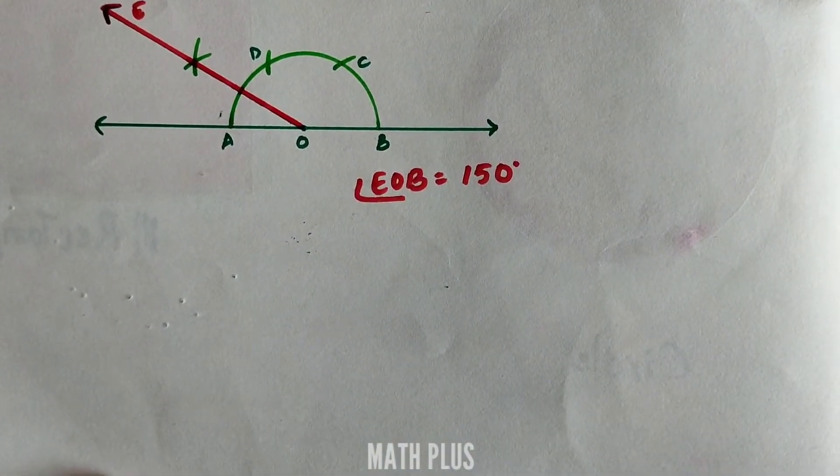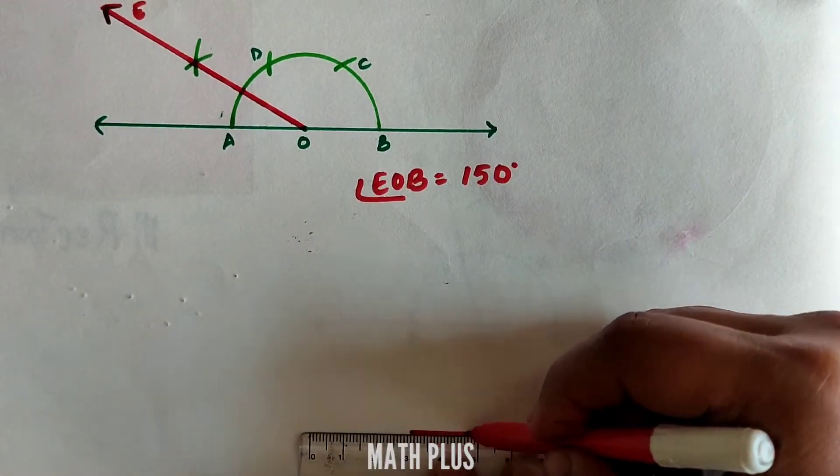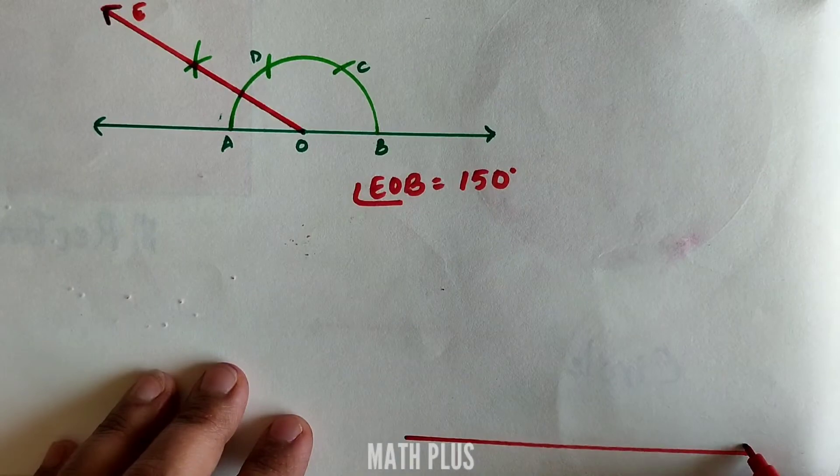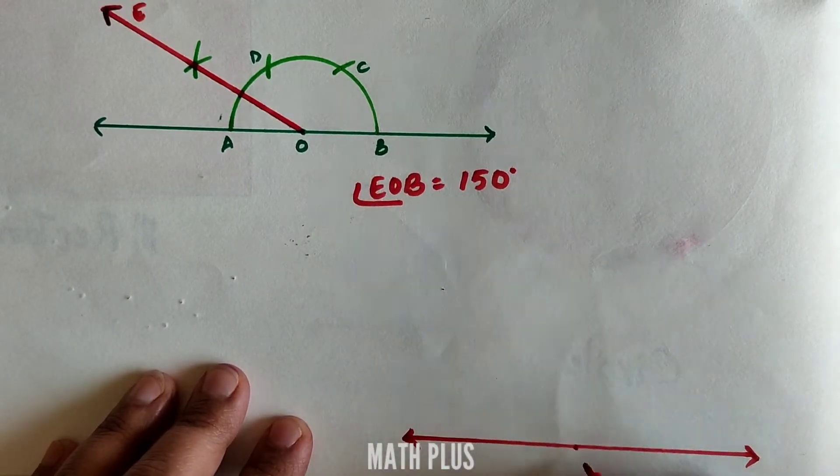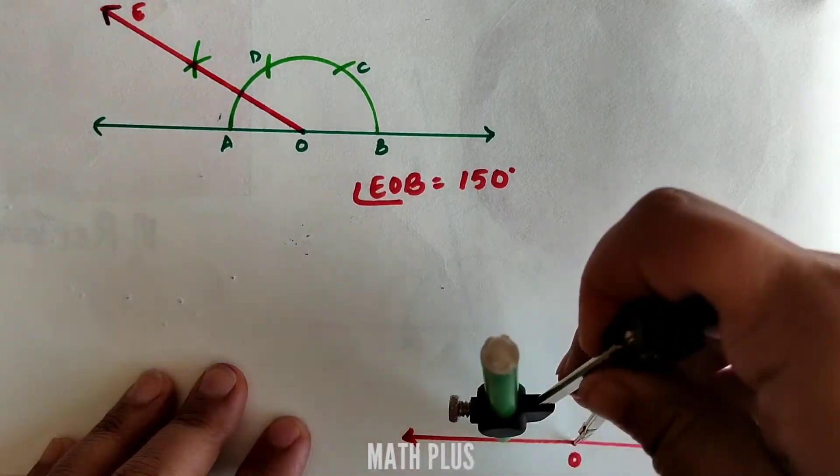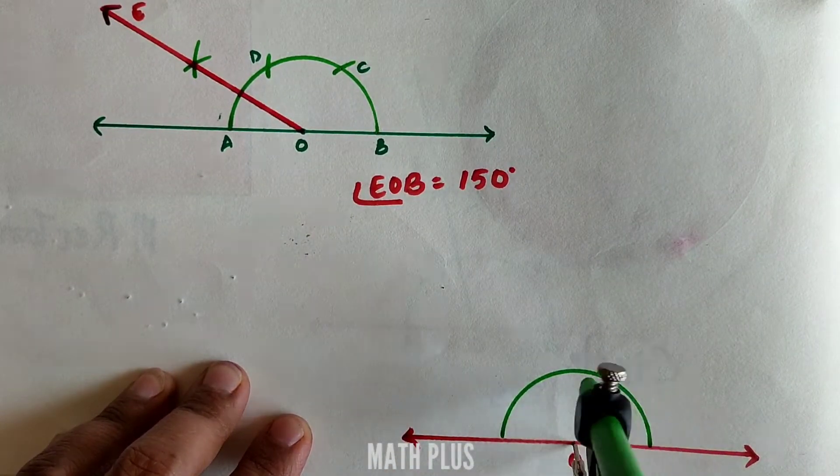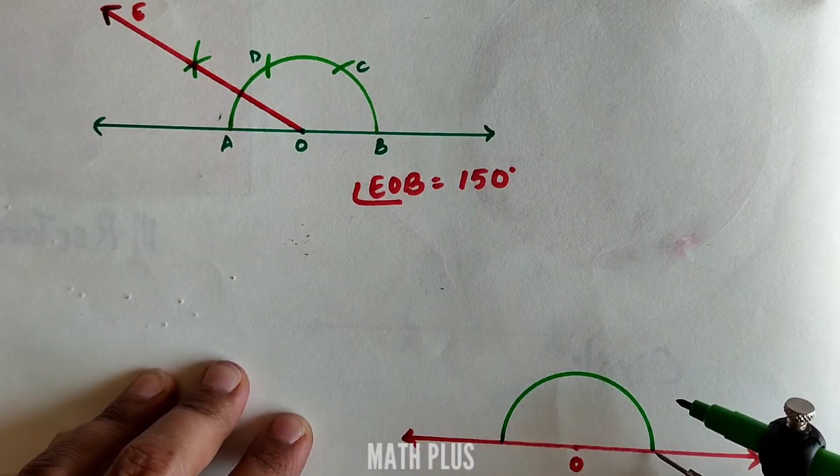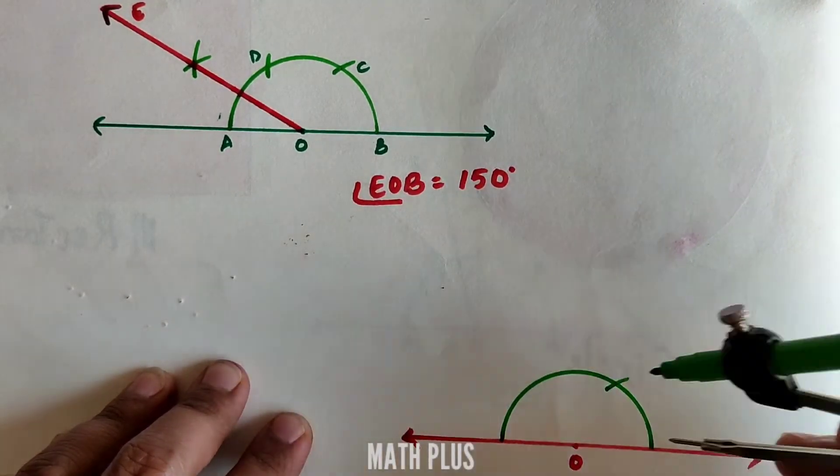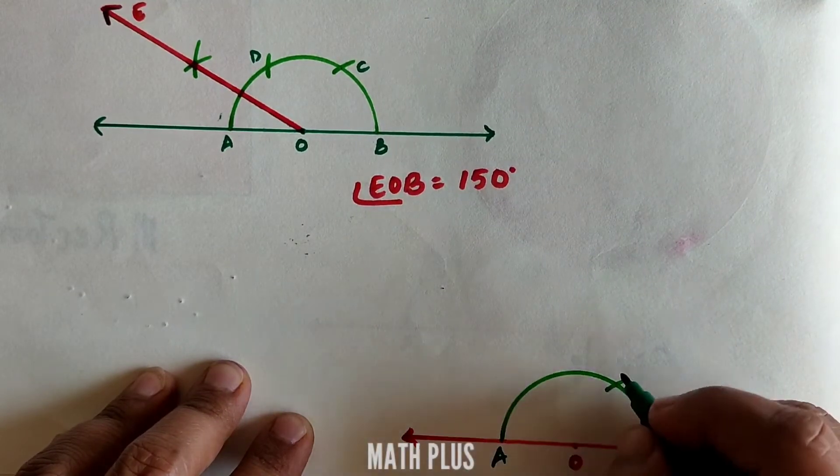Let us construct an angle of 30 degrees now. Draw a line, mark a point O on it. With any radius, draw a semicircle above the line. With the same radius, draw an arc. Name the points A, B, and C.